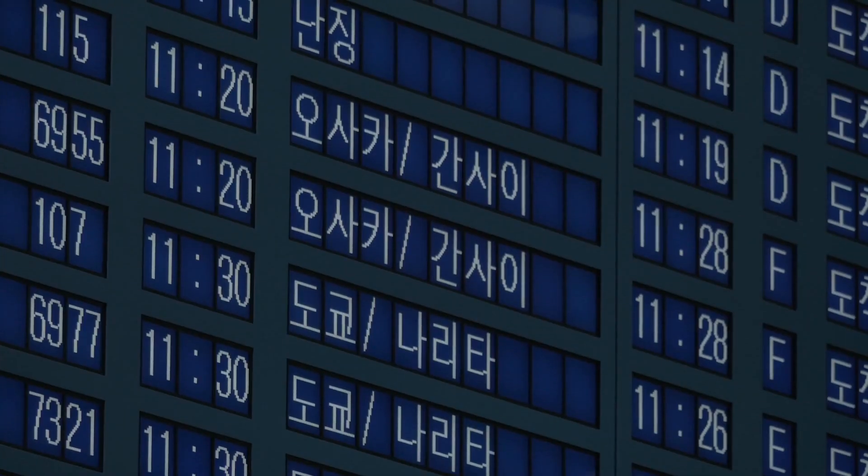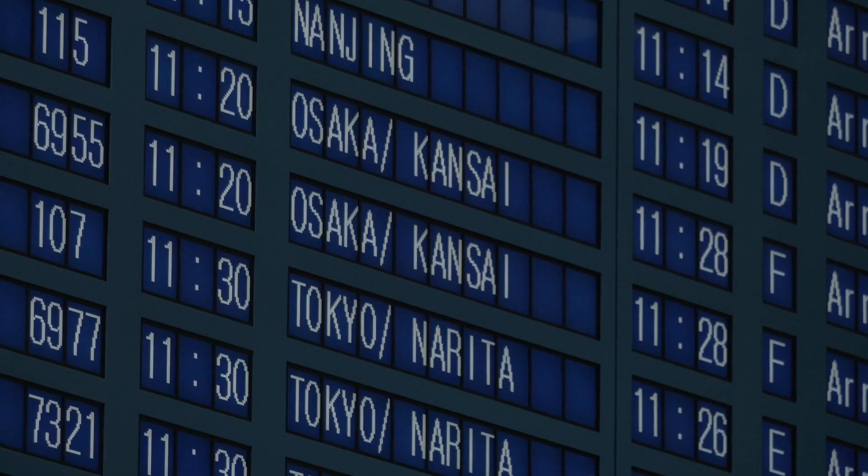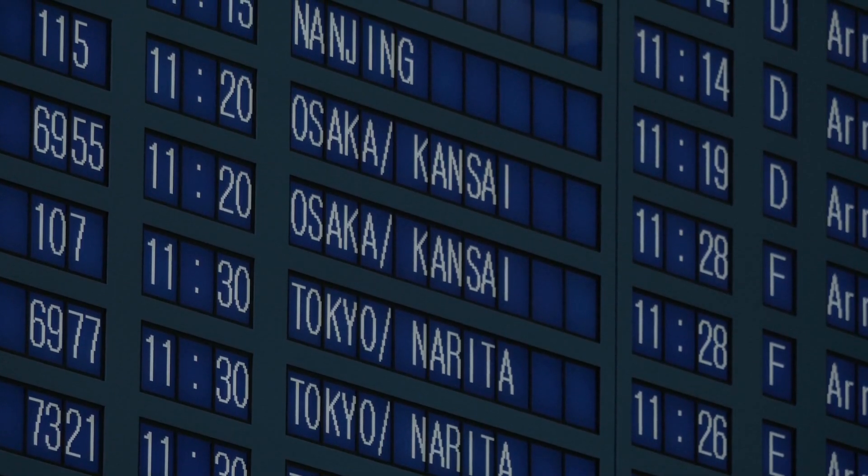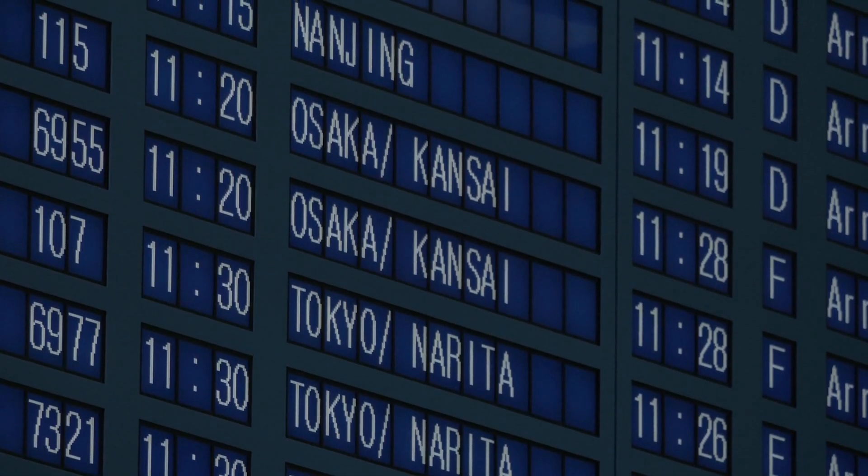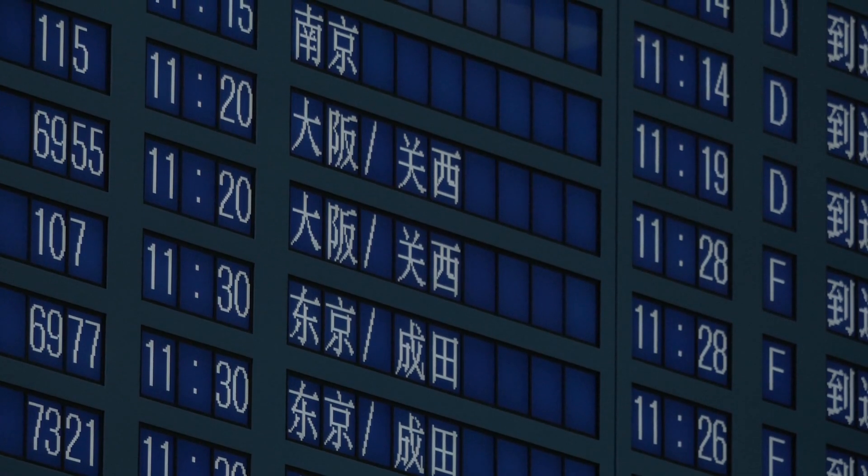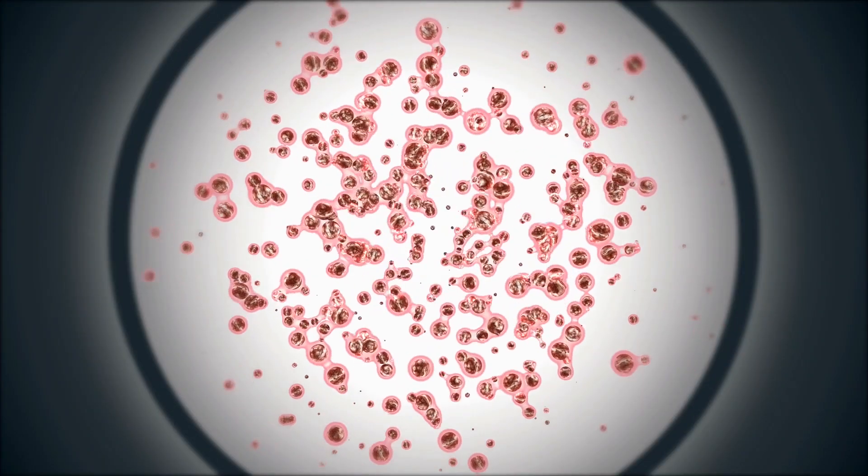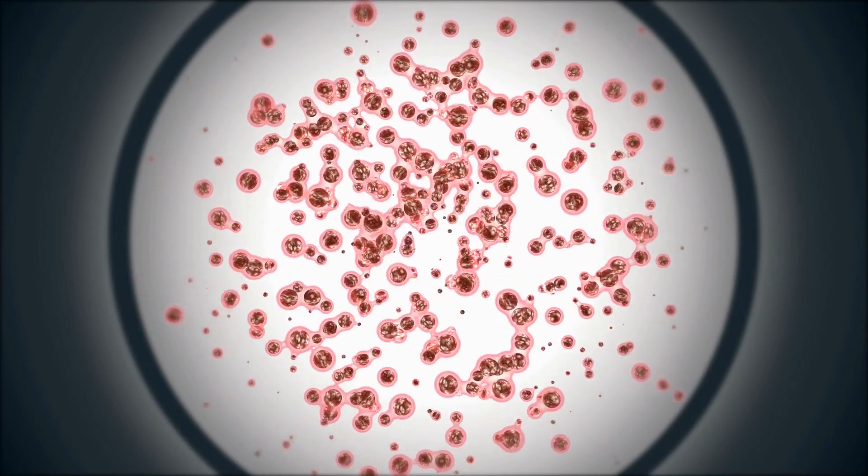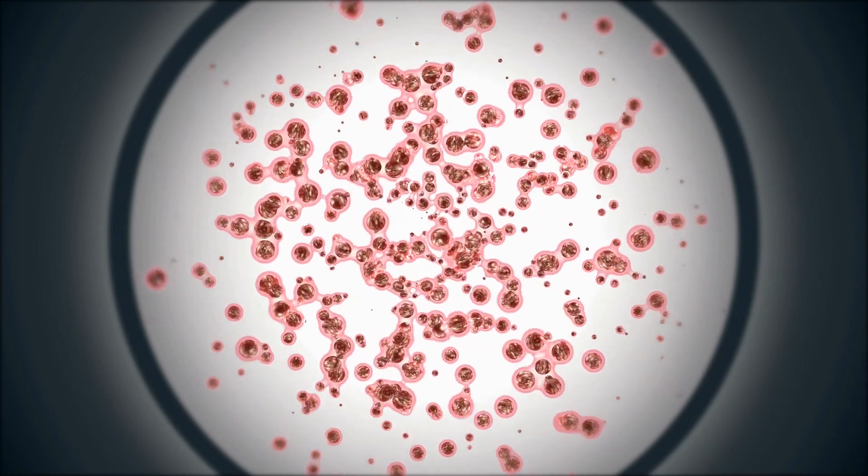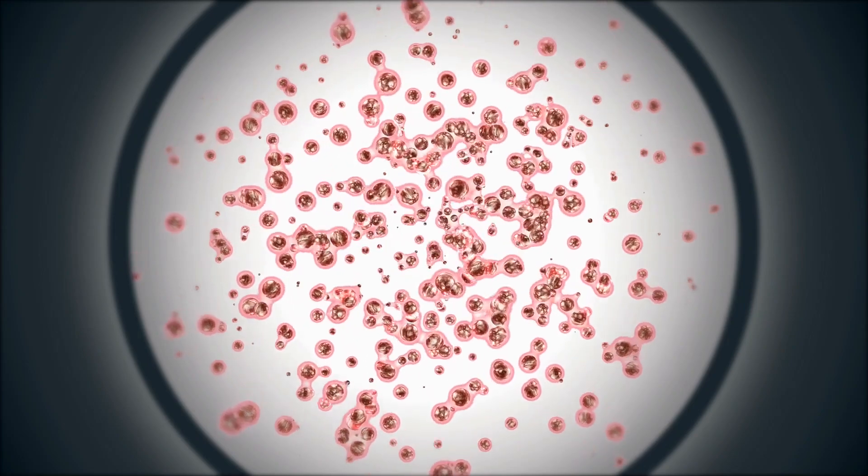The P.1 variant was first detected in Japan in early January when travelers from Brazil tested positive in a Japanese airport. At that time, P.1 wasn't as popular as the UK variant. Eventually, it landed in the US at the end of January.